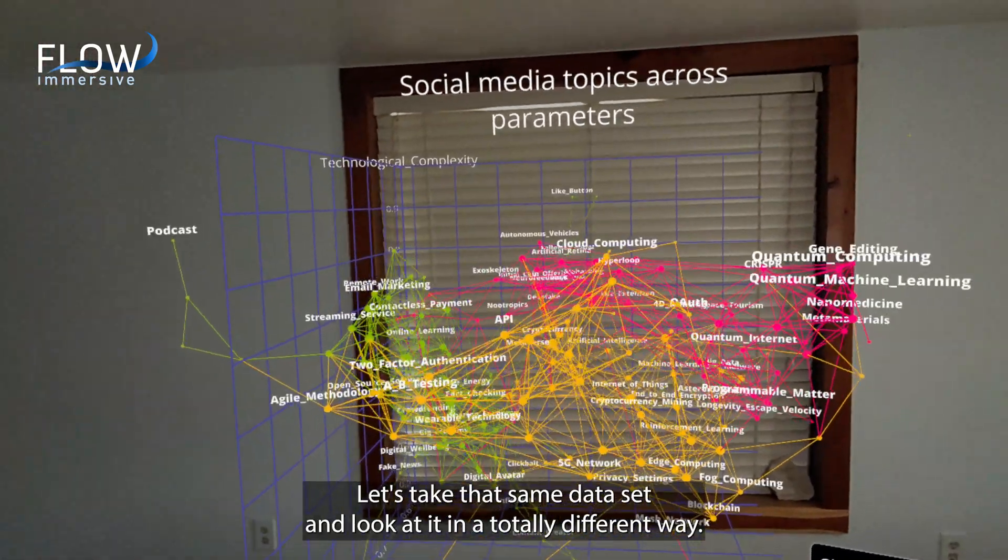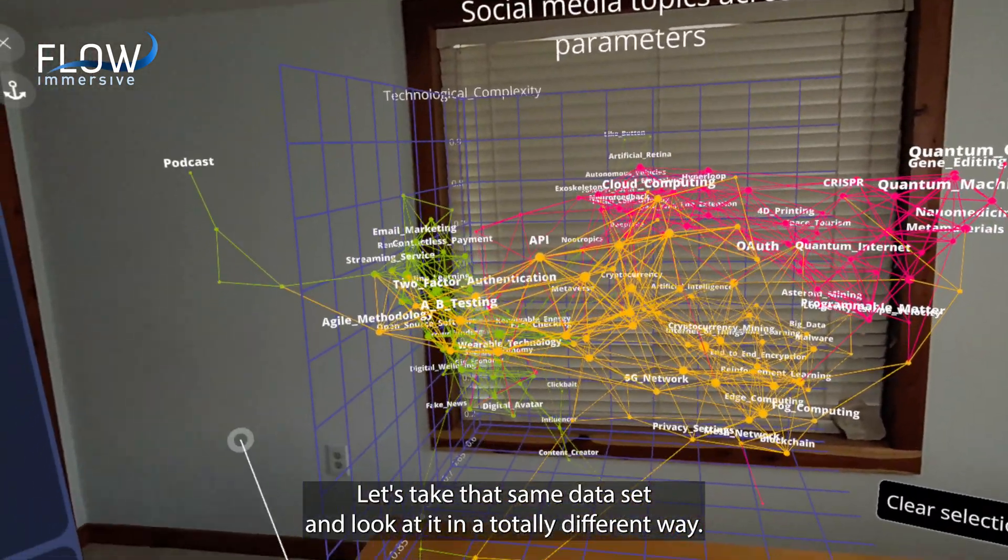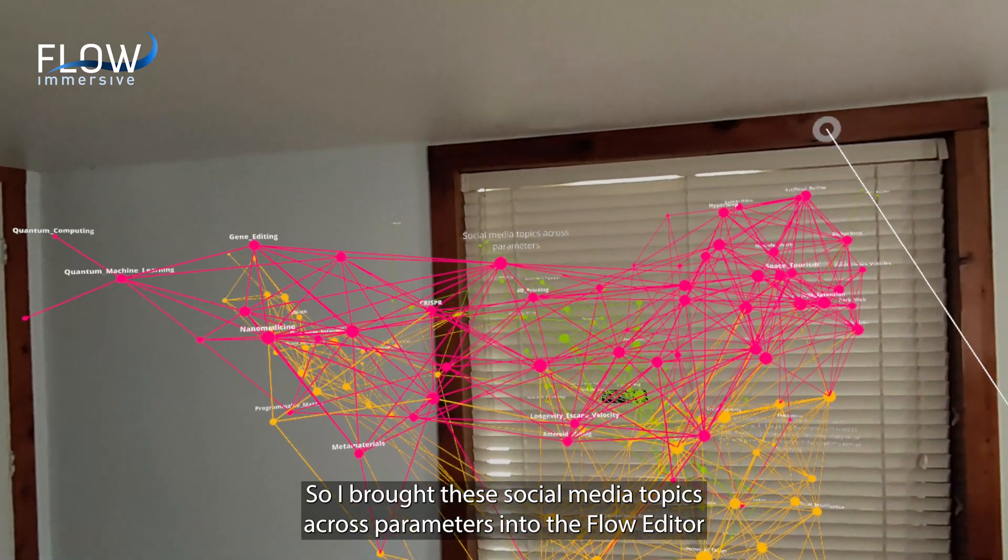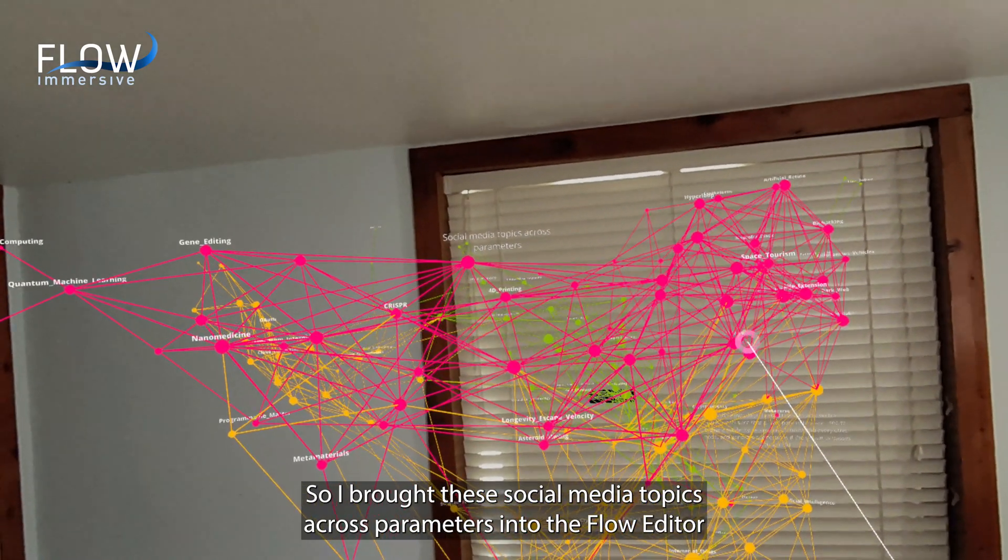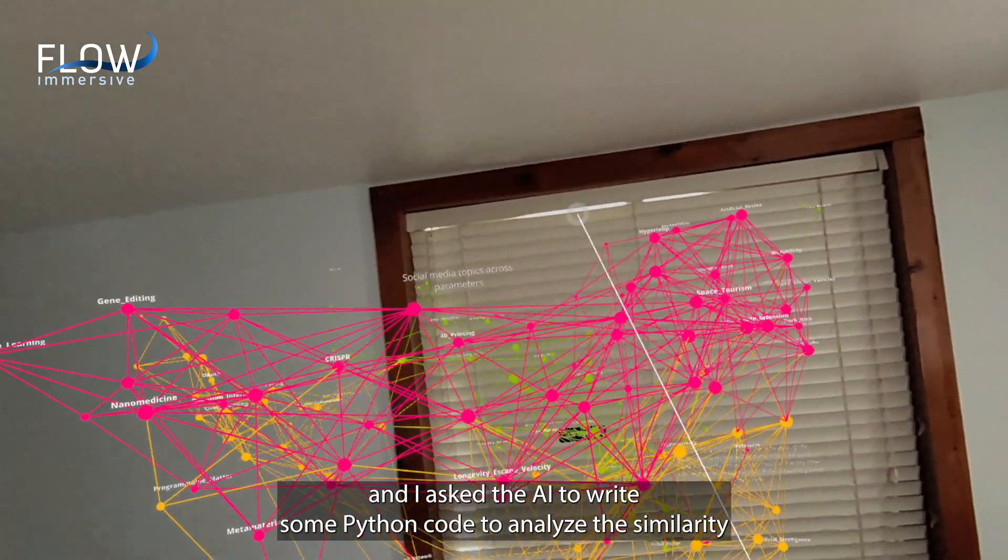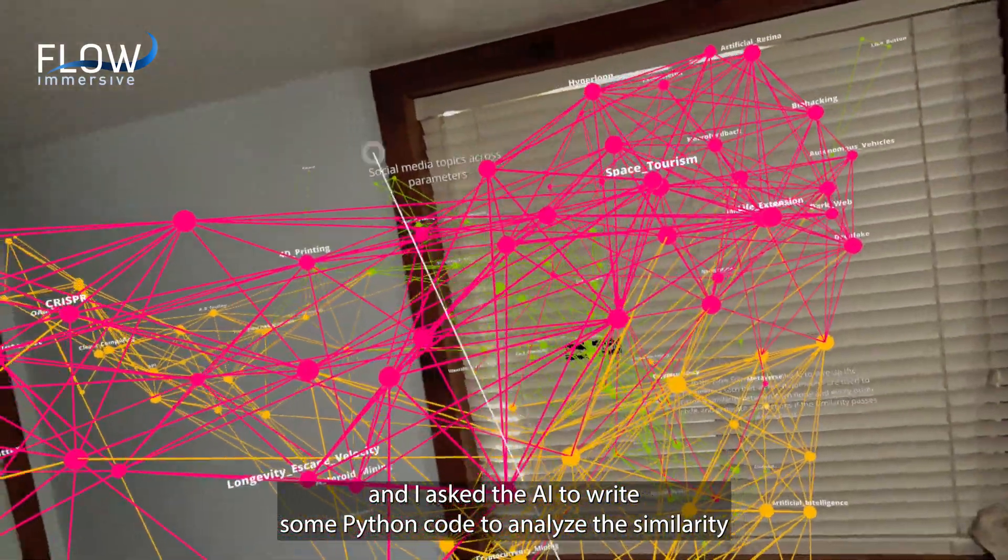Let's take that same data set and look at it in a totally different way. So I brought these social media topics across parameters into the flow editor and I asked the AI to write some python code to analyze the similarity of these different parameters.